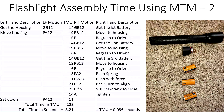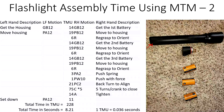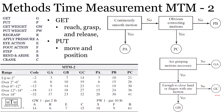Here is the flashlight assembly example. Using my left hand, I'm getting the flashlight housing, which is 12 inches away. Looking at the get algorithm: are grasping motions necessary? Yes. Is it enough to close hand fingers with one motion? Yes — so that's a GB. Because it's 12 inches, the code is GB12, and GB12 reads as 14 TMU.